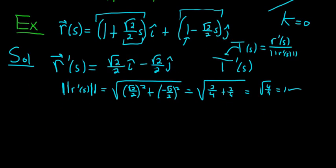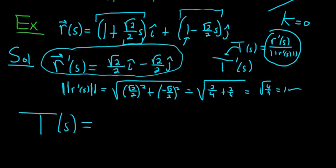So now we can form big T. So big T of S. Well, this is equal to, well, you just use this formula. So it'll be R prime, which is right here, divided by 1. So it's exactly the same thing. It's because we're dividing it by this, which is 1. So it's just the square root of 2 over 2 i hat, minus square root of 2 over 2 j hat.